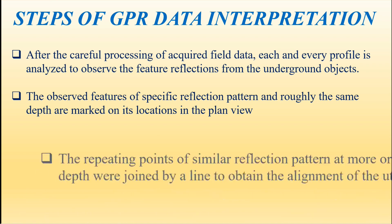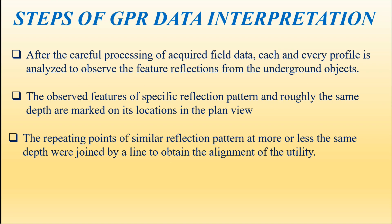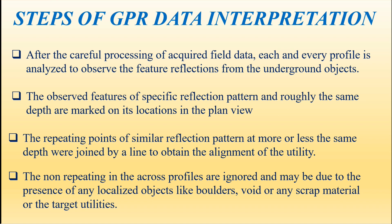The third step: repeating points of similar reflection pattern at more or less the same depth are joined by a line to obtain the alignment of the utility. For example, if there is a water pipeline underground, in different cross-sections you will see the pipeline as an object. Since the pipeline is a continuous feature, you can join the same object reflections at the same depth across sections to understand the alignment of the pipeline.